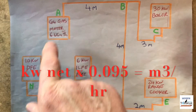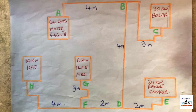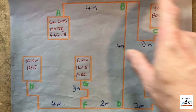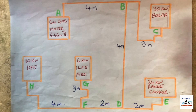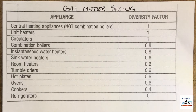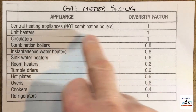This gas meter can only give us six meters cubed per hour, so we need to work out whether this meter is allowed on this installation or not. Sizing a gas meter is pretty straightforward — there are only three steps. Step one: determine the heat input rating of each individual appliance in kilowatts and apply the relevant diversity factor.